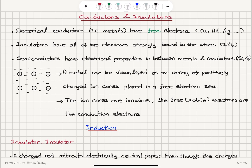On the other hand, between these two extremes, we have semiconductors. They have electrical properties in between metals and insulators — for example, silicon and germanium. In these materials, due to thermal excitations, some of the electrons are detached from the atoms and some stay bound, giving properties in between a free electron metal and an insulator.